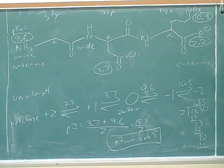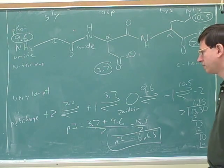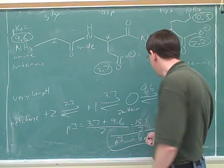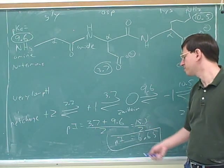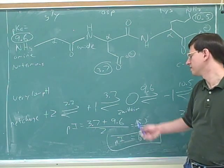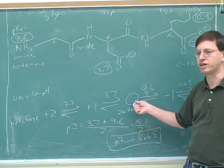And that's a pH value at the very end. That's 6.65 is the pH, this is the PI, which means it's the pH at which the zwitterion would be at its maximum concentration.